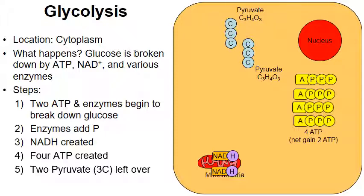Notice that four molecules of ATP were created, but we say a net gain. Glycolysis makes a net gain of two ATPs. Why? Even though glycolysis made four, two ATPs were used to start the process of glycolysis. So when you subtract the two required to start from the four that were created, we say a net gain of two ATP molecules. Now let's move on into fermentation.